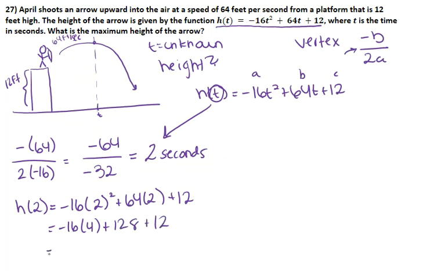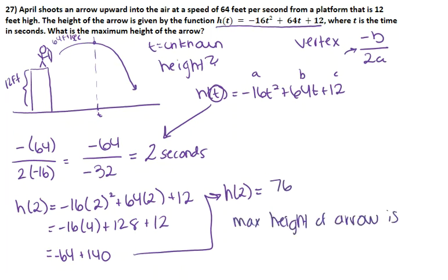Combine like terms and finish multiplying out. So negative 16 times 4 is going to get you -64. Negative 128 plus 12 will be plus 140. Let's combine like terms one more time. 140 minus 64 will get you 76. So this 76 means that the max height of your arrow is going to be 76 feet.